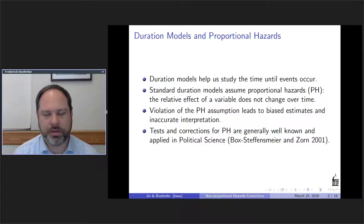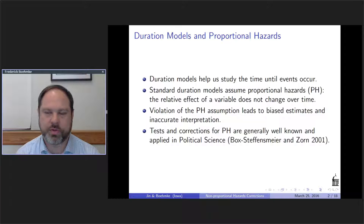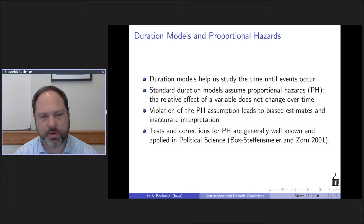In general, this relates to the use of duration models to study the timing of political events — how long wars last, how long people stay in Congress, how long it takes for someone to make a decision about how to vote. Of course, these are applied widely in other contexts like biostats as well. Standard duration models — think about parametric duration models like the Cox and Weibull, or the semi-parametric Cox estimator — all assume what's called the proportional hazards assumption.